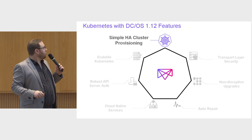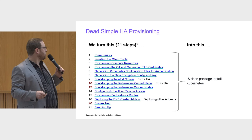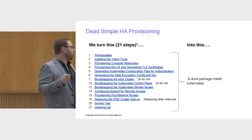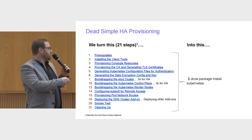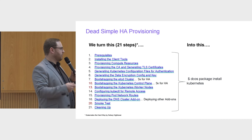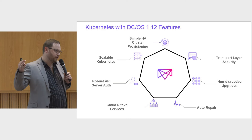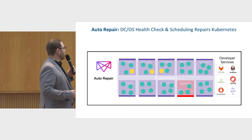With Kubernetes on DCOS 1.12, we have simple HA cluster provisioning. The manual process to deploy and configure Kubernetes is a 21-step process with many sub-steps, and with security and HA there are even more steps. We've automated all of that — including security and HA — into one single command that you can do via CLI or through the DCOS interface. In terms of upgrading and scaling, we've reduced 15–20 steps into one or two steps.